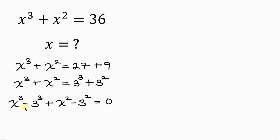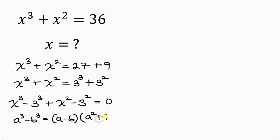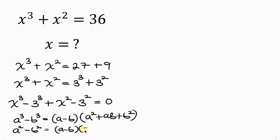Notice that we have a difference of two cubes and a difference of two squares. The difference of two cubes has the identity: a³ minus b³ equals (a minus b)(a² plus ab plus b²). The difference of two squares has the identity: a² minus b² equals (a minus b)(a plus b).